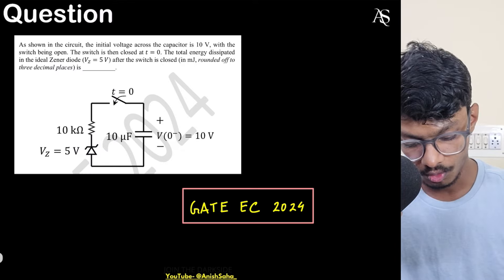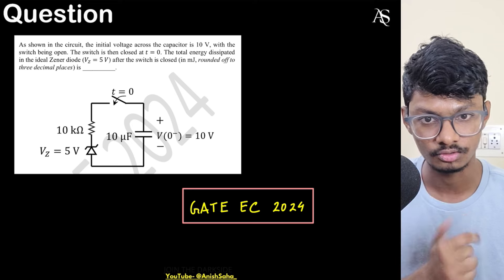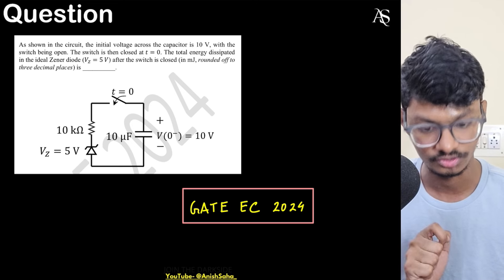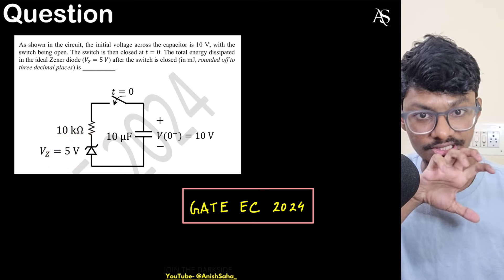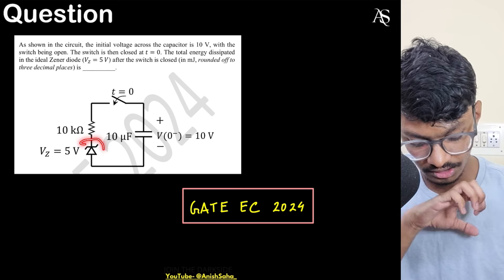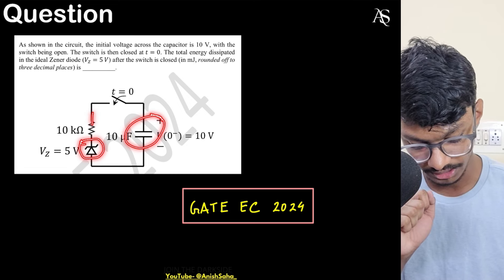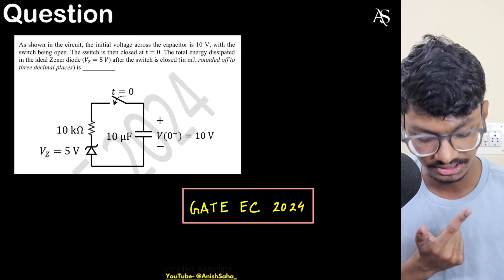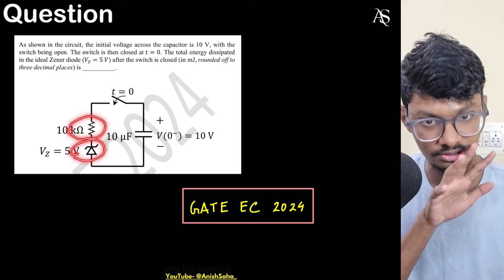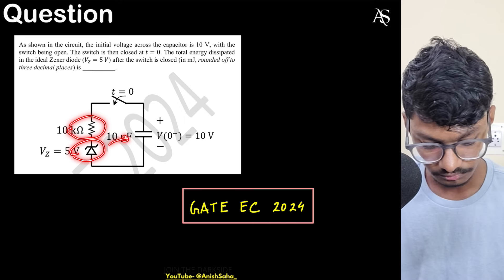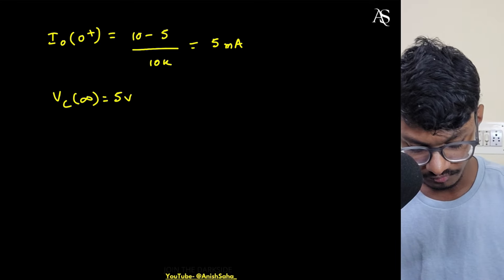At steady state, the rate of change of capacitor voltage is zero, which means the current through the capacitor is zero. The zener turns off when the voltage across it becomes 5 volts or lower. When the capacitor voltage reaches 5 volts, the current through the circuit is zero amperes, so the drop across the resistor is zero. Therefore at steady state, vc(∞) = 5 volts.